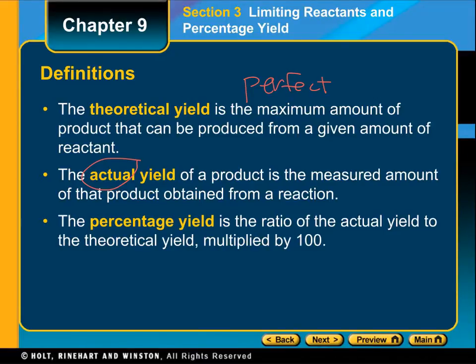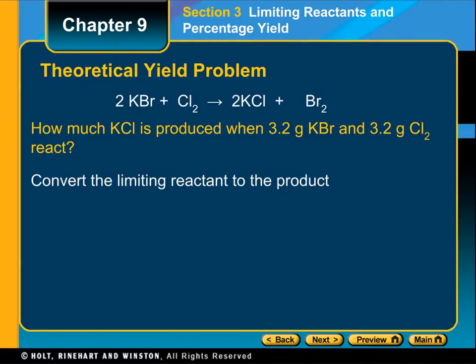Here's the problem: we have a balanced equation, and they're asking us how much KCl is produced. We're looking at KCl produced when 3.2 grams of KBr and 3.2 grams of Cl2 react. This is the same problem that we did prior in the limiting reactant problem.